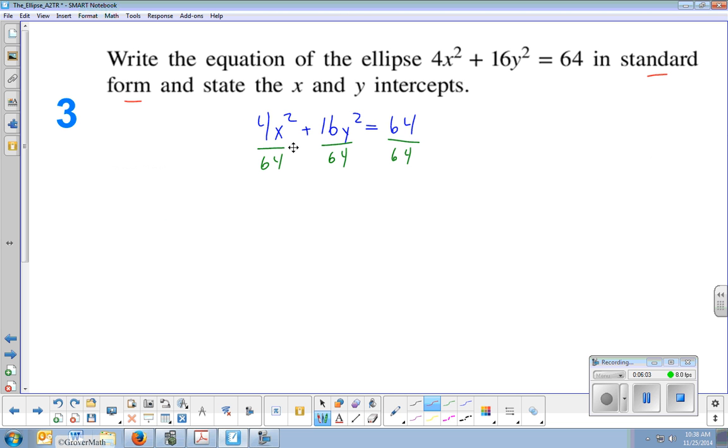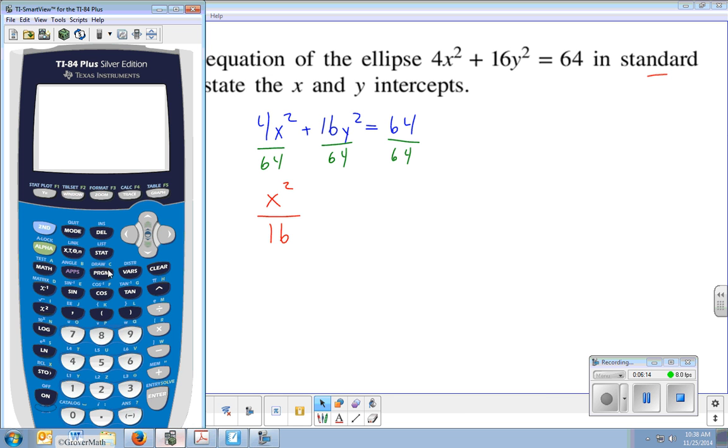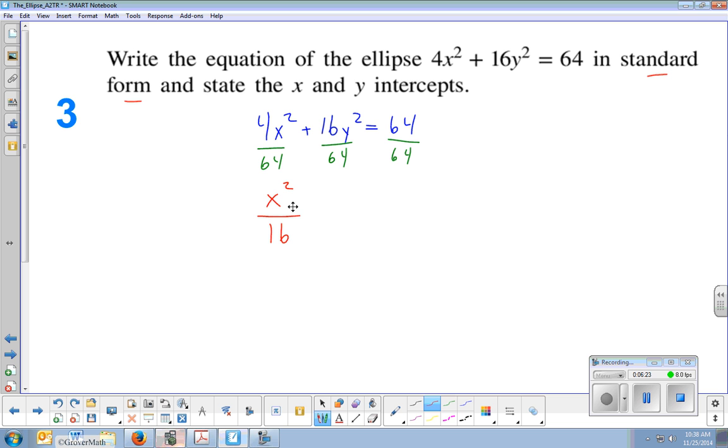And so when I simplify this out, I could simplify 4 over 64. It becomes x squared. 4 over 64 simplifies to 1 over 16. You could type that in your calculator if you're not quite sure. This can simplify fractions for you. 4 divided by 64, and then just do math, double enter. It'll convert it to 1 sixteenth for you. If you want to put a 1 here, that's fine. Plus 16 over 64 simplifies to 1 fourth. So y squared over 4 equals 64 divided by 64 is 1, and that's the crucial part, we need it to set equal to 1 in standard form.